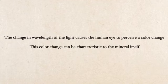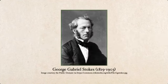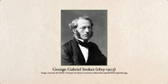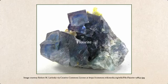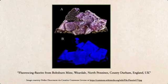This color change can be very characteristic to the mineral involved. As was found out by George Gabriel Stokes — a guy with an absolutely awesome name — in 1852, he was studying this mineral from the audience: fluorite. He noticed that fluorite fluoresced, and that is actually where we get the word fluorescence from. It is in honor of the mineral fluorite.